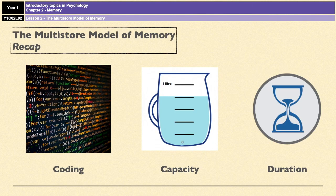Just as a brief recap: coding is the way that memories are processed, and according to Baddeley, short-term memory is coded acoustically and long-term memory is coded semantically. Capacity refers to how much information can be held in a memory store, and according to Miller, the capacity of short-term memory is seven plus or minus two items, and long-term memory is thought to have an unlimited capacity. Duration refers to how long information is available for retrieval, and according to Peterson and Peterson, the duration of short-term memory is 18 to 30 seconds, and according to Baric, the duration of long-term memory is potentially unlimited.